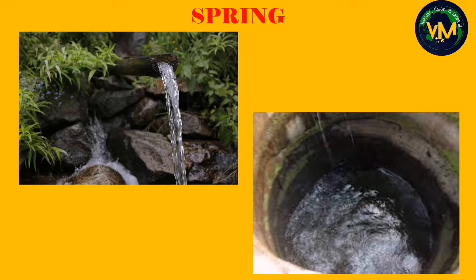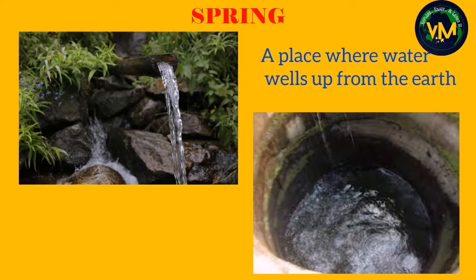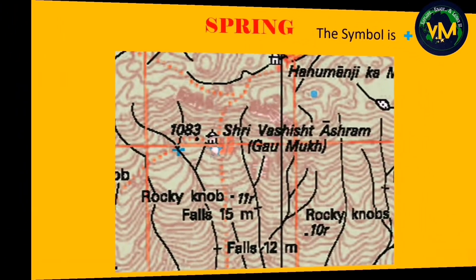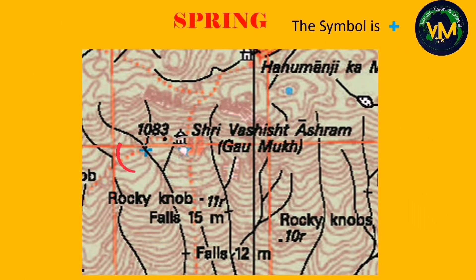Spring — this is a picture of a spring. It is a place where water wells up from the earth. The symbol is a blue color plus sign. It is blue because it is usually perennial.